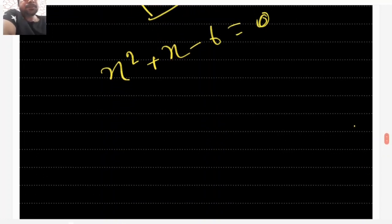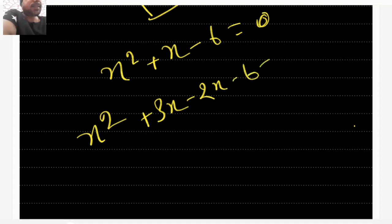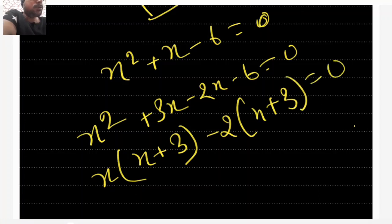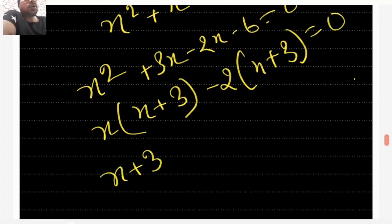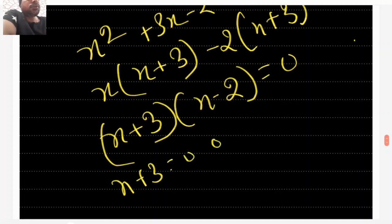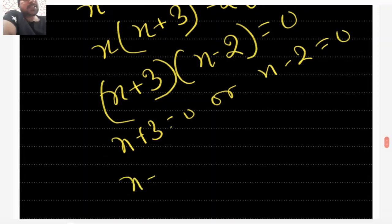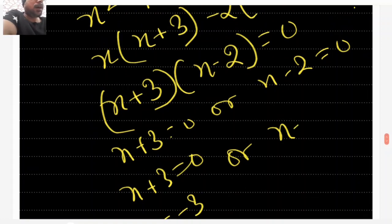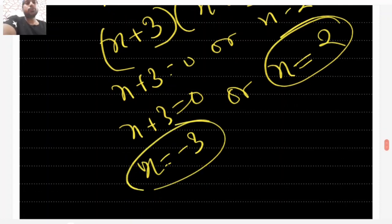Let's solve it: x² + 3x - 2x - 6 = 0. Take x common: x(x + 3), and take -2 common: -2(x + 3) = 0. Now take (x + 3) as common: (x + 3)(x - 2) = 0. So x + 3 = 0 gives x = -3, or x - 2 = 0 gives x = 2. Again you got two answers.